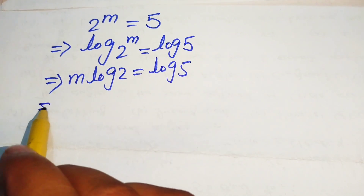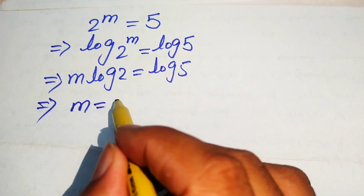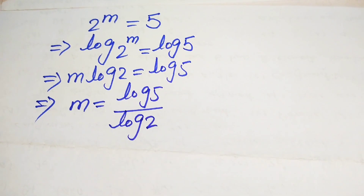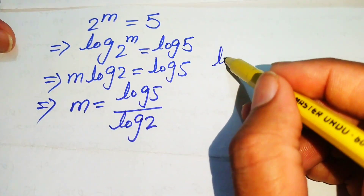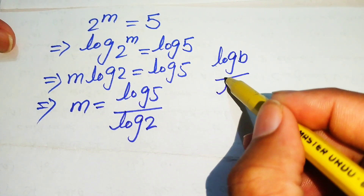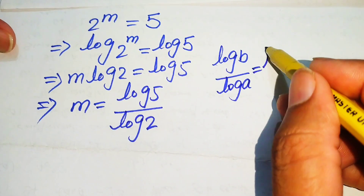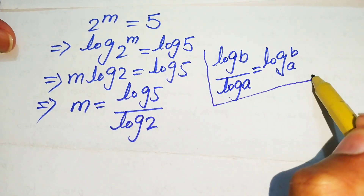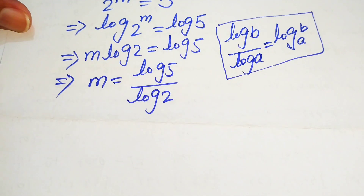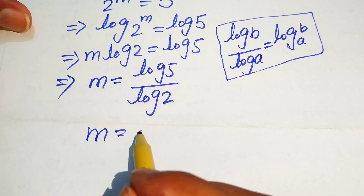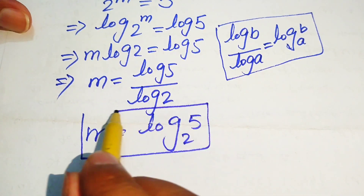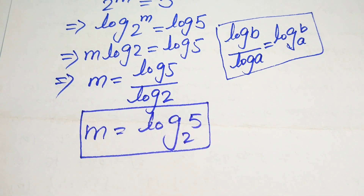Moving log 2 to the right-hand side gives m equals log 5 divided by log 2. Using the change-of-base property — log b over log a equals log base a of b — we write the final answer as m equals log base 2 of 5. Thank you for watching, please subscribe to the channel for more videos.